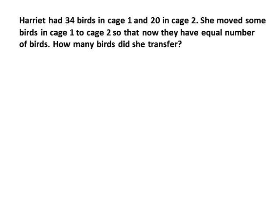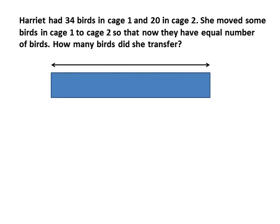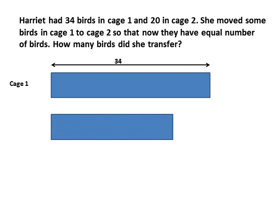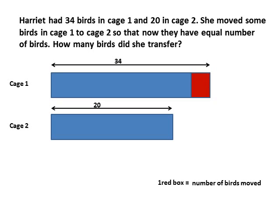So here we have two cages. Cage 1 has 34 birds and cage 2 has 20 birds. The second line says she moved some birds from cage 1 to cage 2 so that they now have equal number of birds. Looking at the box with 34, we took some of those — represented by the red box. One red box is the number of birds that we moved, and we don't know how many birds that is.